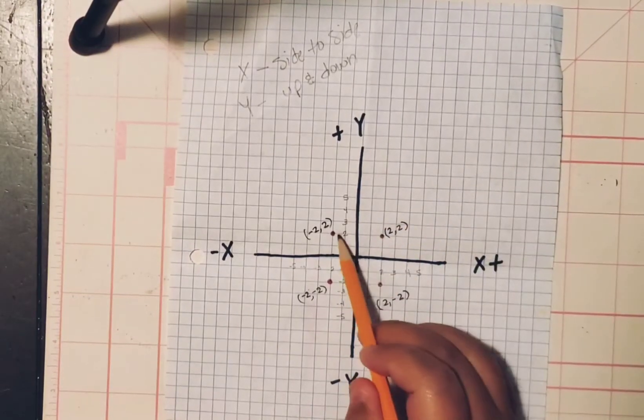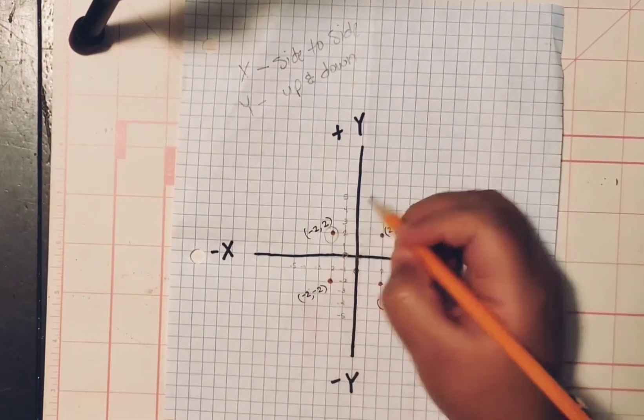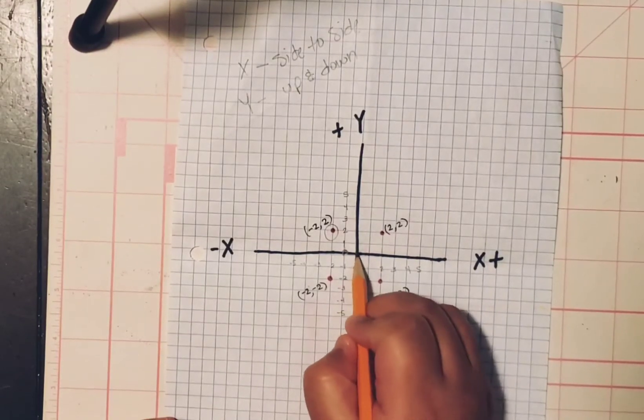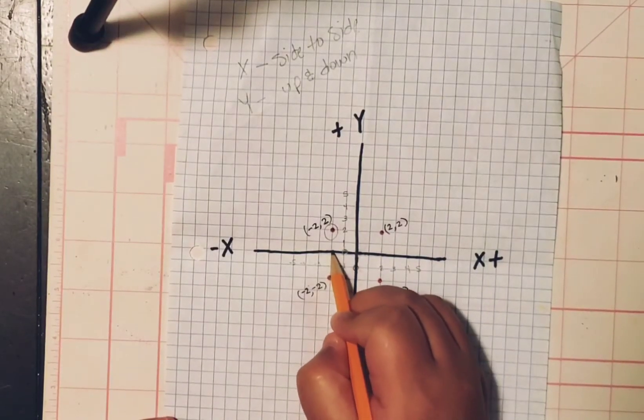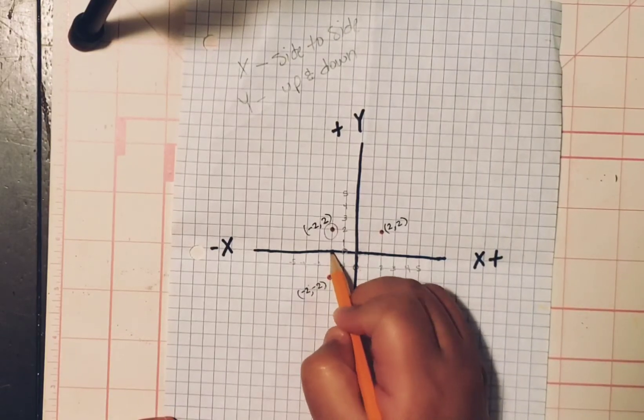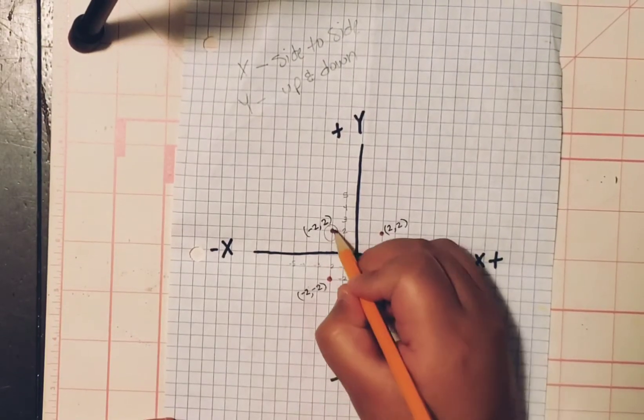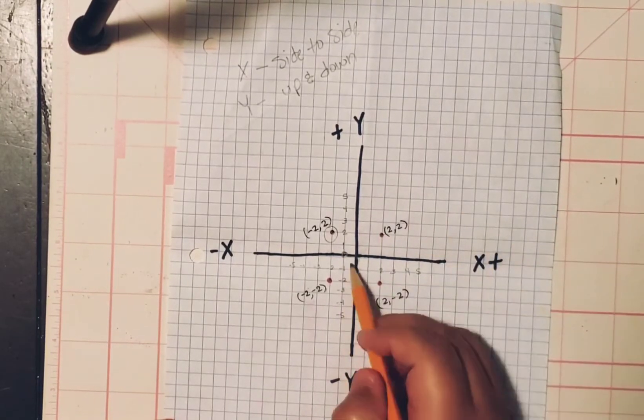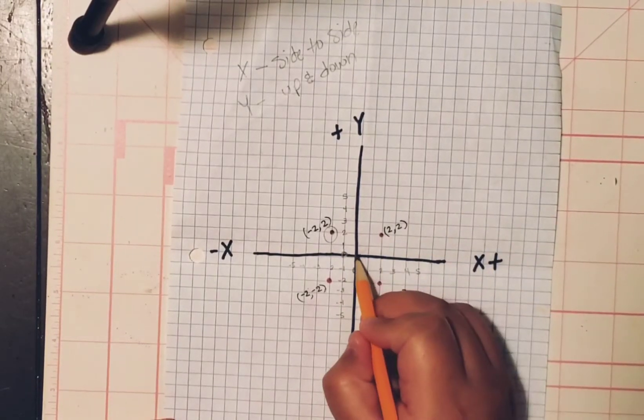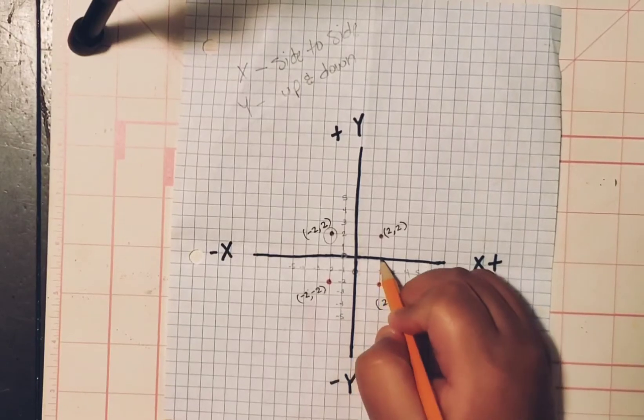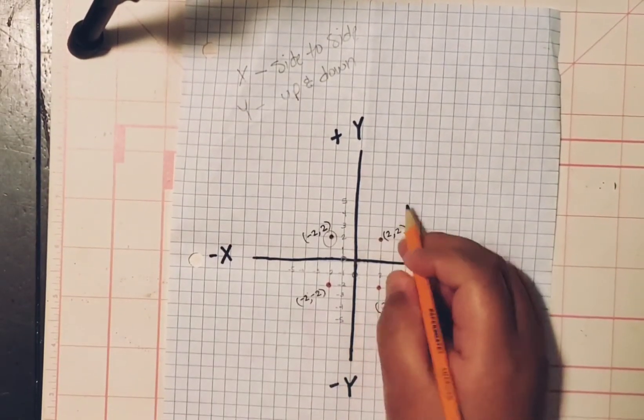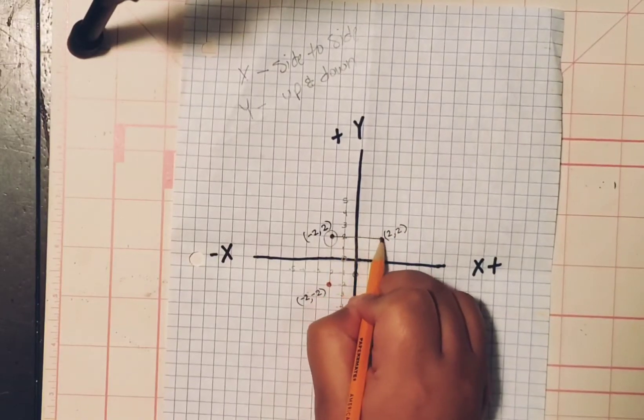So for this one, we're going to plot this first point right here. We're going to move. So X right here. One, two. It's a negative two. And we go up two right here. Then we're going to plot this one right here. So we start one, two. And then we go up two. So two to the two. And they're both positive. We're going to connect them.